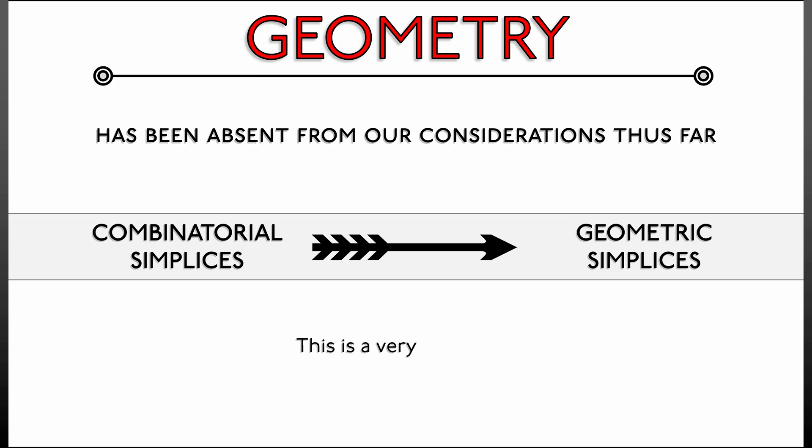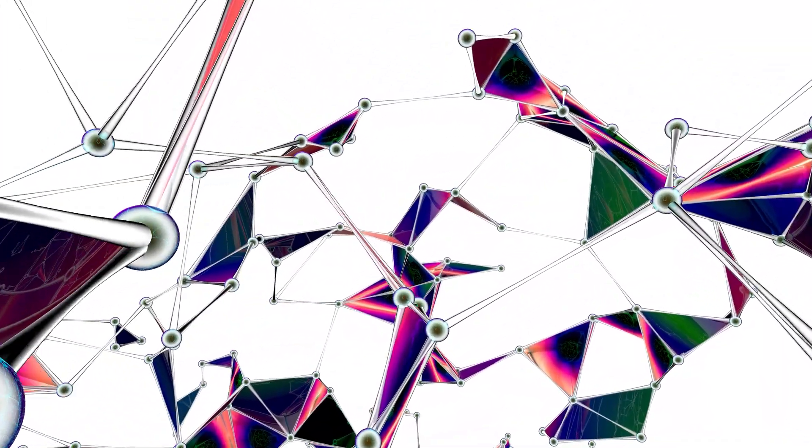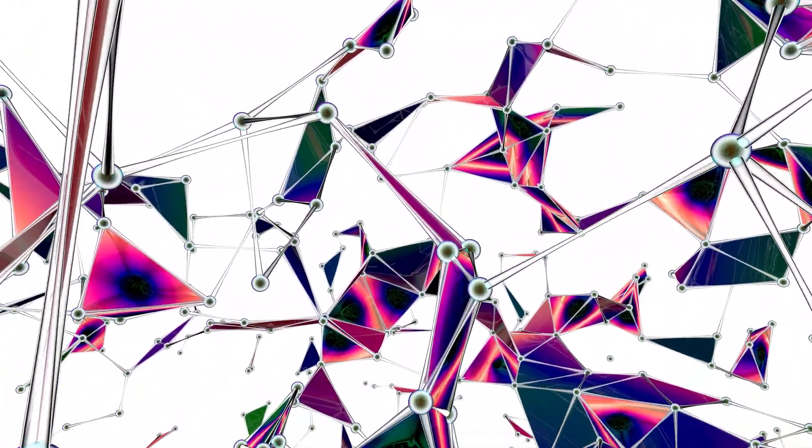That is going to help us in a number of different ways. First and foremost, you might think the motivation is so that we can draw pictures of simplicial complexes as we have been doing. We've just had these combinatorial structures, but still we've been drawing pictures.